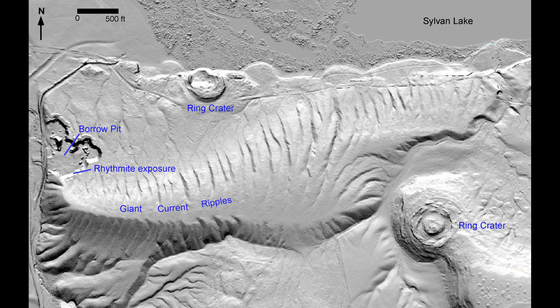The three megaflood features are: one, giant current ripples; two, ringed dikes and craters; and three, flood rhythmites.